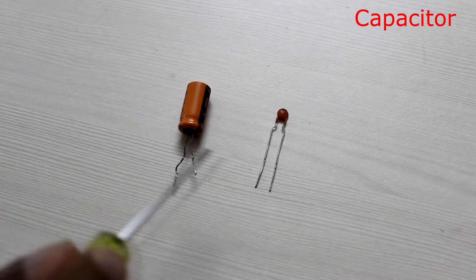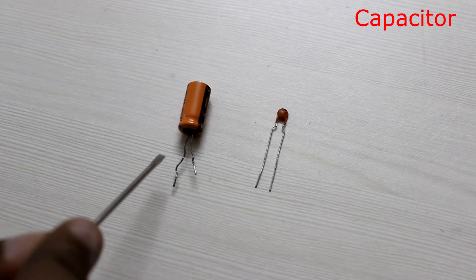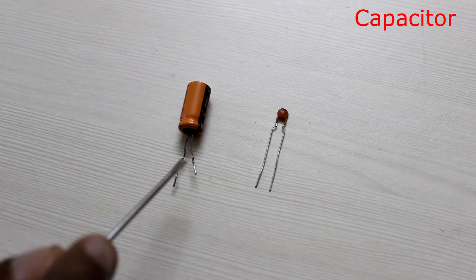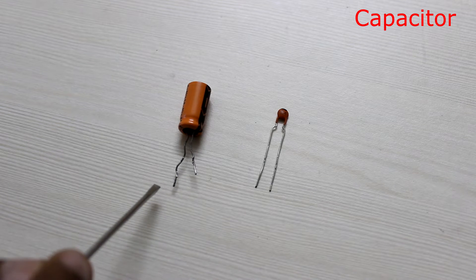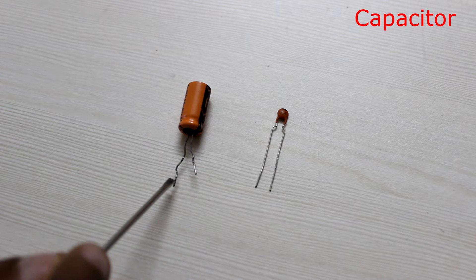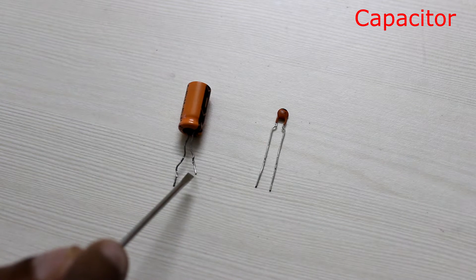This is how capacitors look like. The first is an electrolytic capacitor. Electrolytic capacitors are used when high capacitance values are needed. The longer pin corresponds to the positive terminal and the shorter to the negative. Hence you must make sure that you connect it with the right polarity in your circuit.